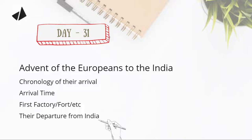Under this topic, it is not very relevant from the exam point of view. Still, for prelims, just know the chronology — who arrived first, then the next, and then the next. After that, note their arrival time, the factories they established for the first time, or the places they visited for the first time. If anything else is there, make a note of it. Also note their departure from India — for example, the Portuguese were the first to enter India and they were also the last to leave India.